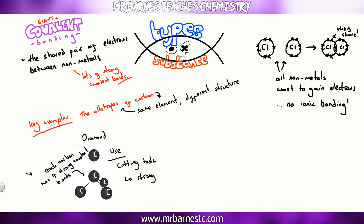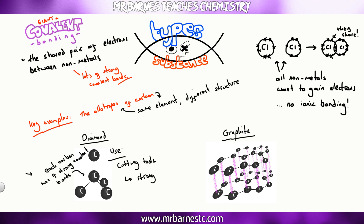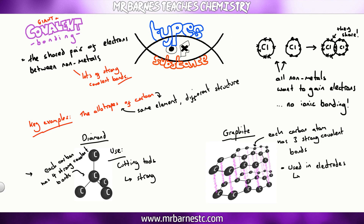Graphite is also made out of carbon but it looks different — it has a different structure. Every carbon atom here only has three strong covalent bonds. This gives it a delocalized electron, and that delocalized electron is free to move, which makes it useful in electrodes.